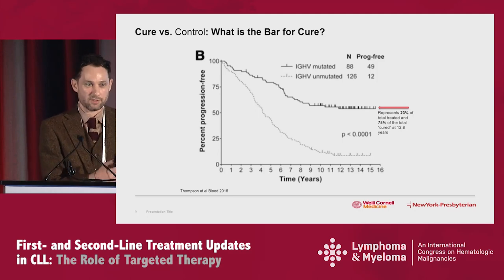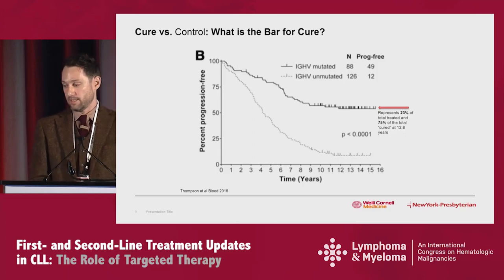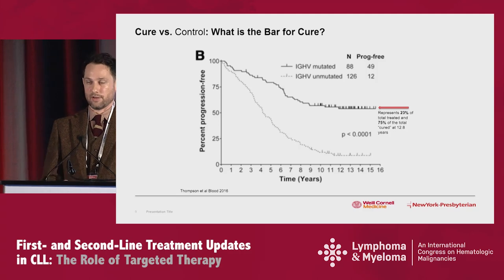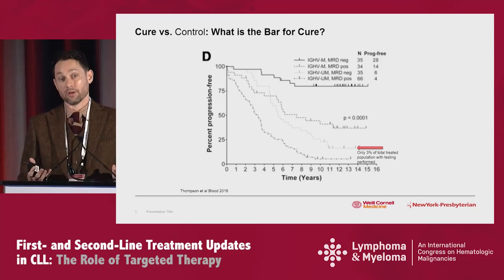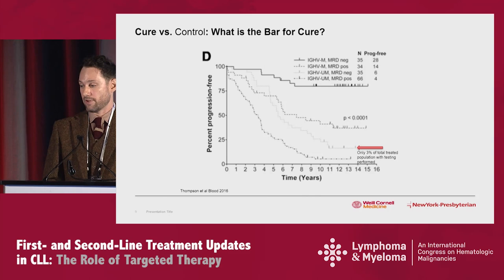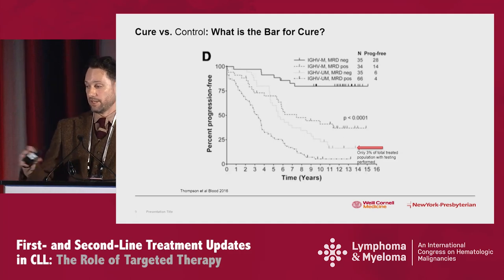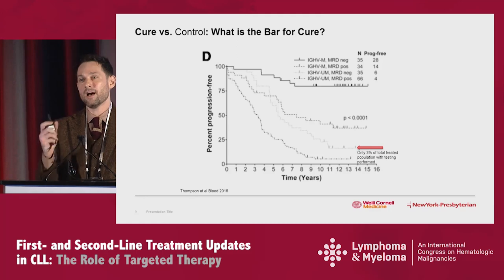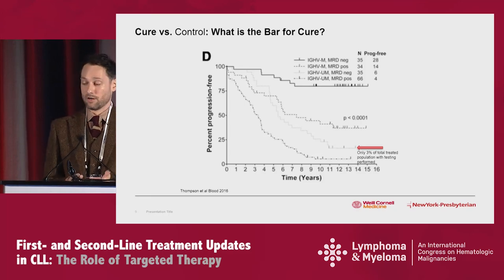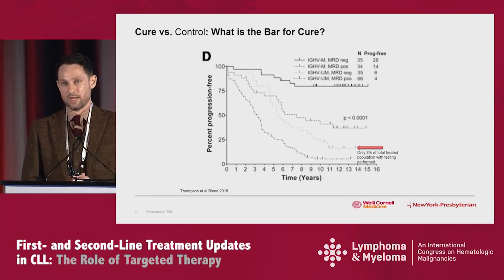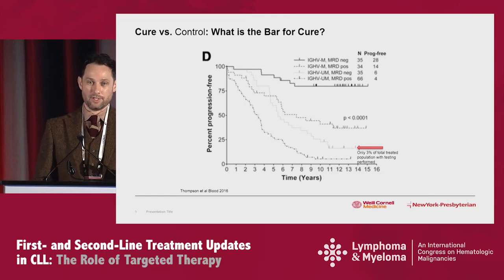We haven't been able to identify which mutated patients will relapse after FCR. When you look at unmutated disease, these patients progress and are not cured with FCR. Importantly, when you look at MRD negativity, the patients who actually get cured are in the IGHV-mutated group — the vast majority of MRD-negative patients have very good long-term PFS. But in unmutated disease, even MRD negativity doesn't necessarily mean long-term cure for everybody because of the biological features of the disease.